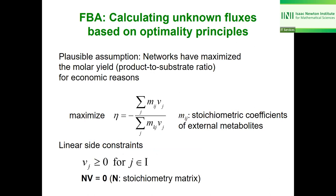In more general terms, a yield is a ratio of linear combinations of fluxes, where the stoichiometric coefficients of external metabolites (written m) and internal metabolites (n) are used. It could be a linear combination because, for example, ATP is consumed in several reactions, or a product is produced in several ways. The minus sign is written for mathematical reasons: substrates have a negative stoichiometric coefficient, so to make the yield positive, we compensate.